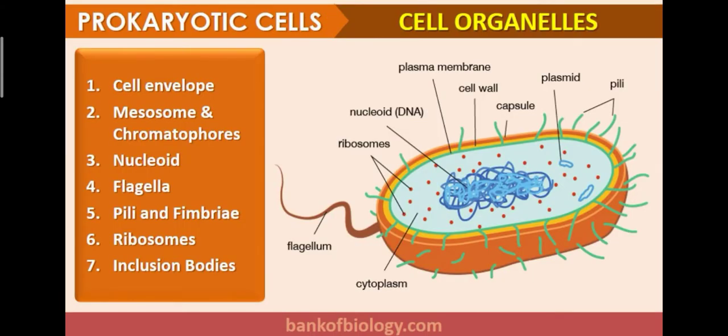Now let's start the prokaryotic cell organelles — what types of organelles are present in prokaryotic cells. Here is a diagram of a prokaryotic bacterial cell. You have to draw the diagram in your copy and label it nicely. The organelles present are: cell envelope, mesosome and chromatophores, nucleoid, flagella, pili and fimbriae, ribosomes, and inclusion bodies — seven cell organelles in total.